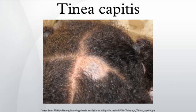Tinea capitis caused by species of Microsporum and Trichophyton is a contagious disease that is endemic in many countries. Affecting primarily pre-pubertal children between 6 and 10 years, it is more common in males than females. Rarely does the disease persist past age 16. Because spread is thought to occur through direct contact with afflicted individuals, large outbreaks have been known to occur in schools and other places where children are in close quarters. In the USA, tinea capitis is thought to occur in 3–8% of the pediatric population.